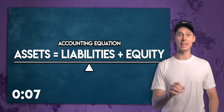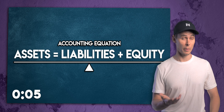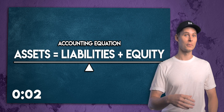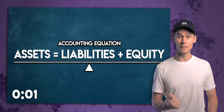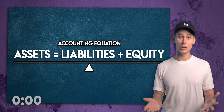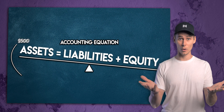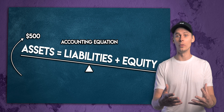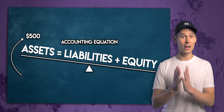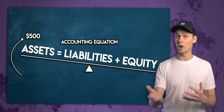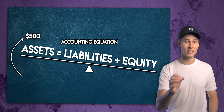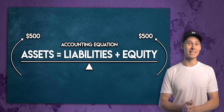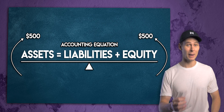Allow me to demonstrate. Let's say a business takes out a $500 loan from a bank. The business received cash which it owns, so its assets go up, and at the same time it records a loan payable to the bank. It owes this to a third party so its liabilities go up too. The accounting equation stays perfectly balanced.